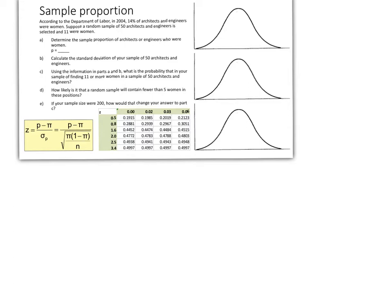So our population proportion π is 0.14, and then P, our sample proportion, is 11 out of 50, or 22%. So the answer to part A is 0.22.